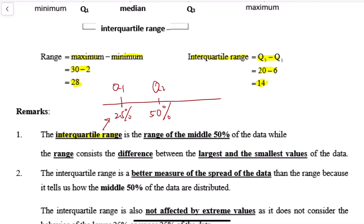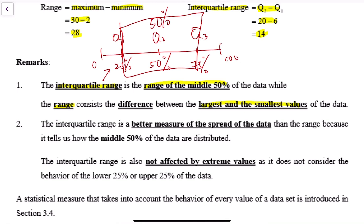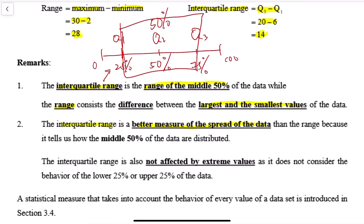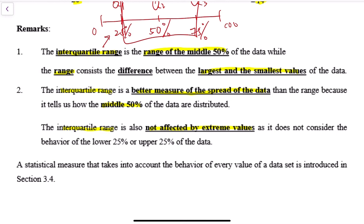Interquartile range: Q1 is at the 25% mark, Q2 at 50%, and Q3 at 75% of the full data. If my data goes from zero to one hundred percent, then interquartile range only looks at the middle numbers. I cut away the bottom 25% and the top 25%, so the interquartile range is the range of the middle 50%, whereas the regular range is just the largest minus the smallest value. When measuring the spread of data, it is always better to use interquartile range because it is a better measure — we only take the middle 50%.